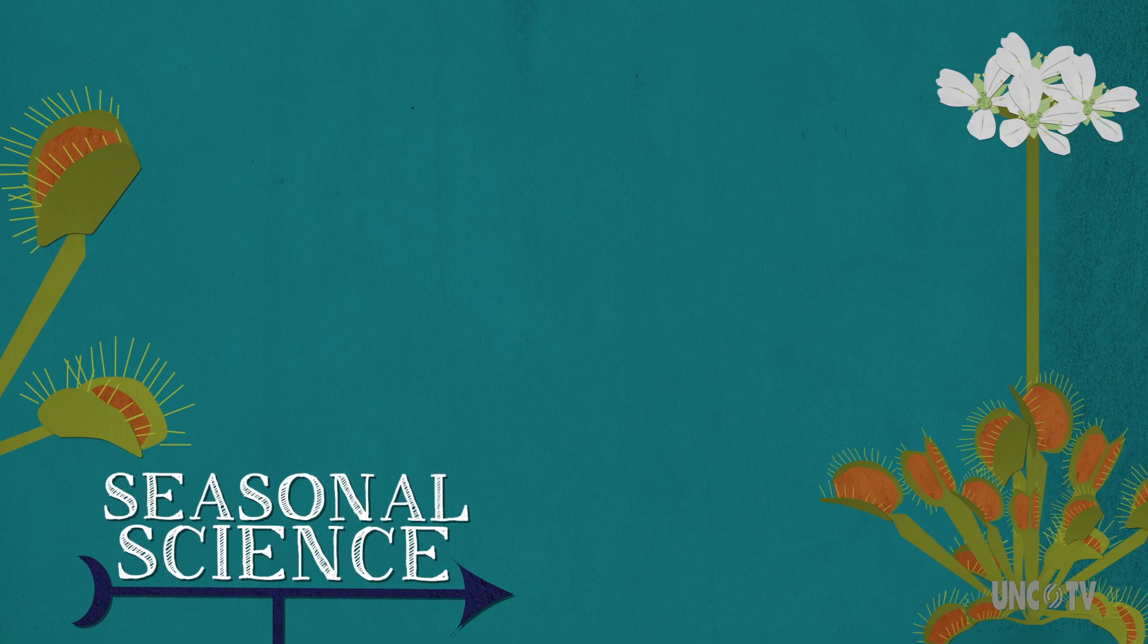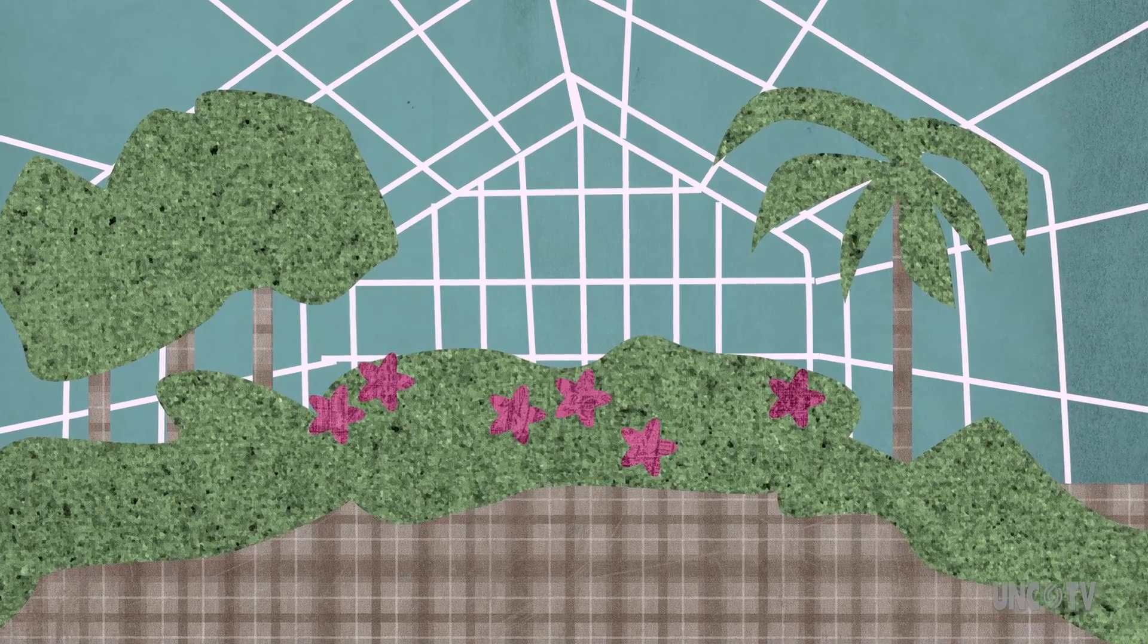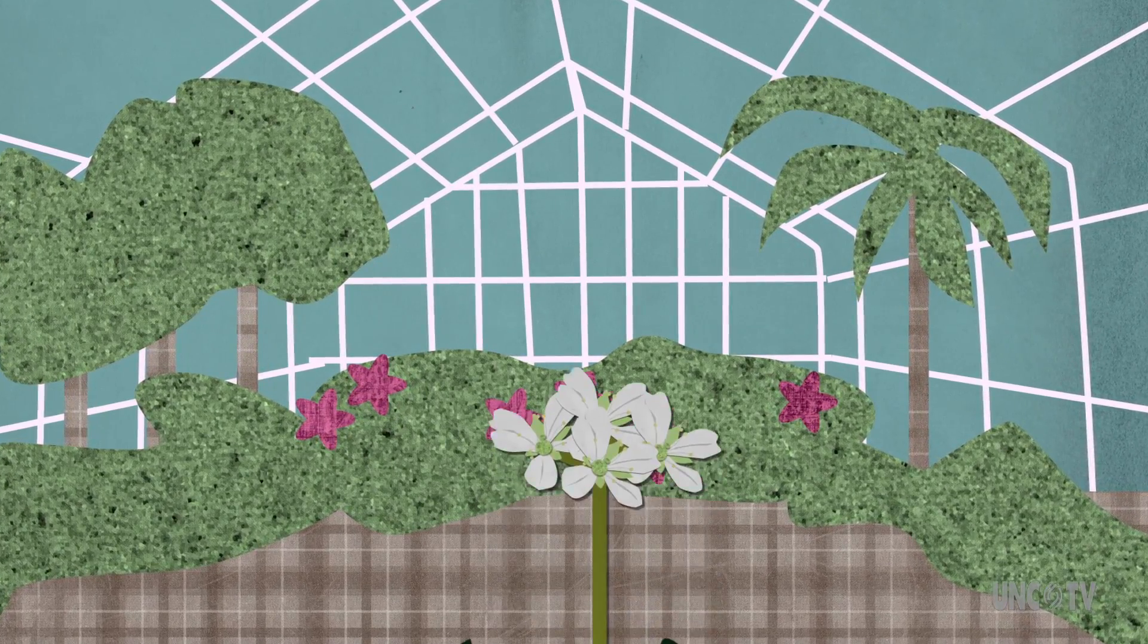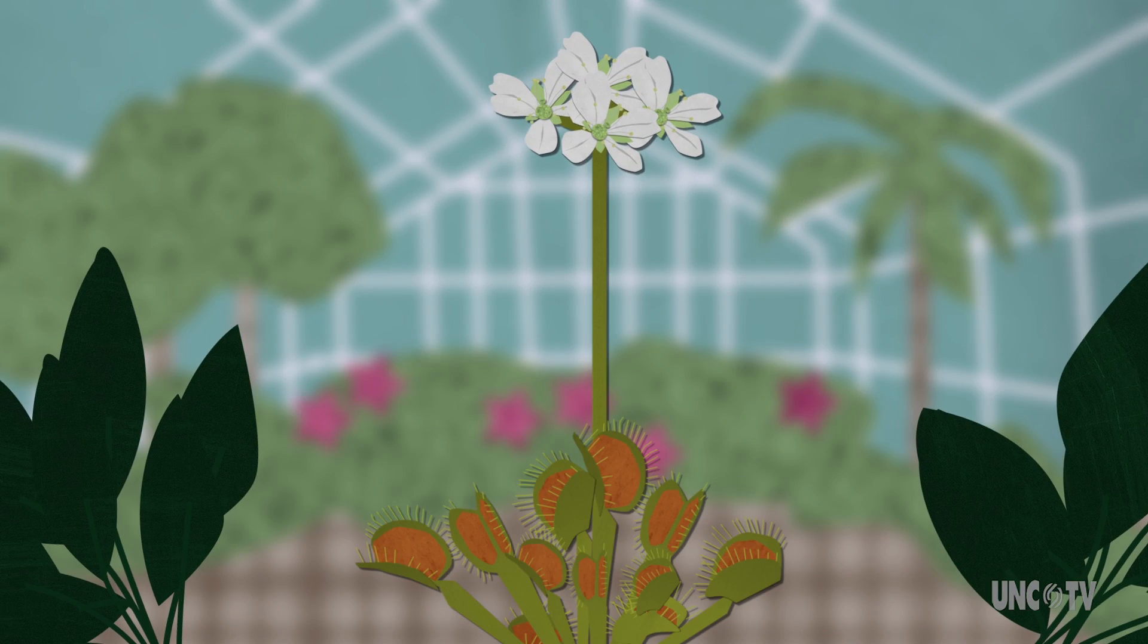Seasonal science brings you Venus flytraps. Head to your local botanical garden this April or May, and you'll likely see a small white flower sprouting amid the intimidating jaws of the Venus flytrap.